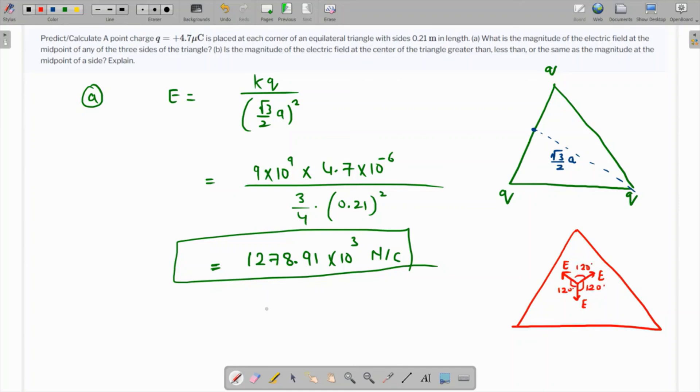So now we are going to say that the electric field at the corner is more than the electric field at the center. Since at the center the electric field is just zero, thank you.